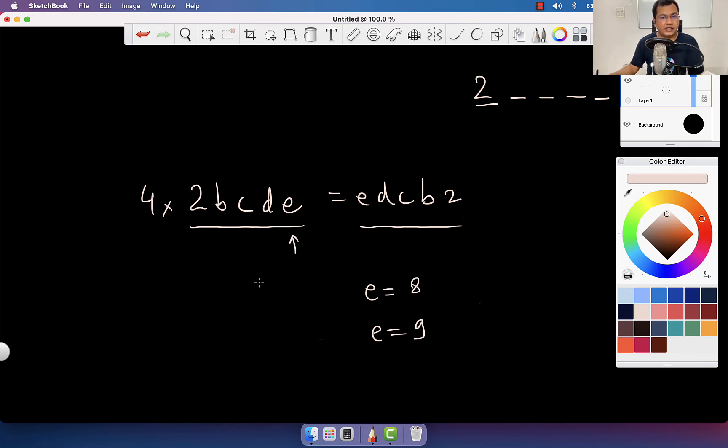So either e is 8 or e is 9. But last digit logic: if e is 9, 4 times 9 is 36, last digit will be 6, but I want the last digit to be 2. So this can't be 9, this has to be 8 for us to have a last digit 2. Check: 4 times 8 is 32, so e is 8.